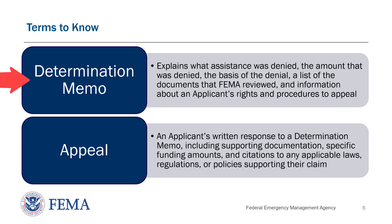The Determination Memo, or DM, is an official memorandum that explains what assistance was denied, the amount that was denied, the basis of the denial, a list of documents that FEMA reviewed, and information about an applicant's rights and procedures to appeal. This can be viewed in Grants Portal, where the applicant and recipient can review it and submit an appeal if needed. An appeal is the applicant's written response to a determination memo. It includes an appeal letter, any necessary supporting documentation, specific funding amounts, and citations to any applicable laws, regulations, or policies that support their claim.